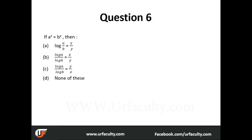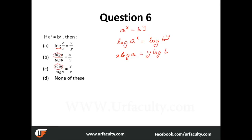Next: a to the power of x equals b to the power of y. We need to find which answer option is correct. Applying log on both sides: log a to the power of x equals log b to the power of y, which gives x log a equals y log b. Rearranging: log a divided by log b equals y divided by x. That is your answer.